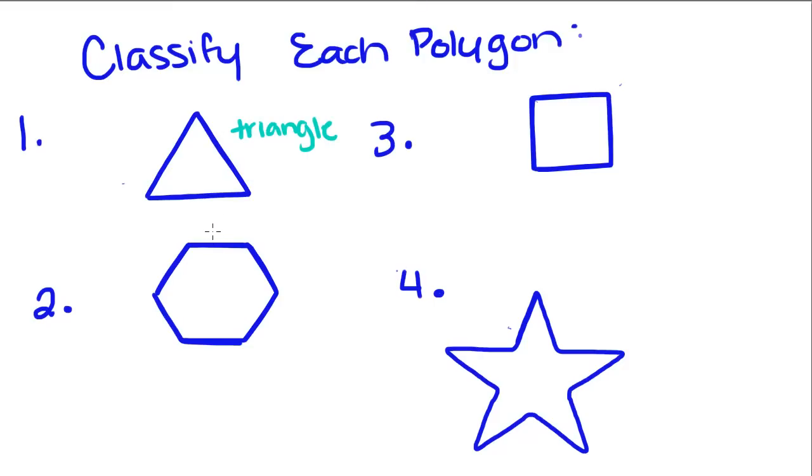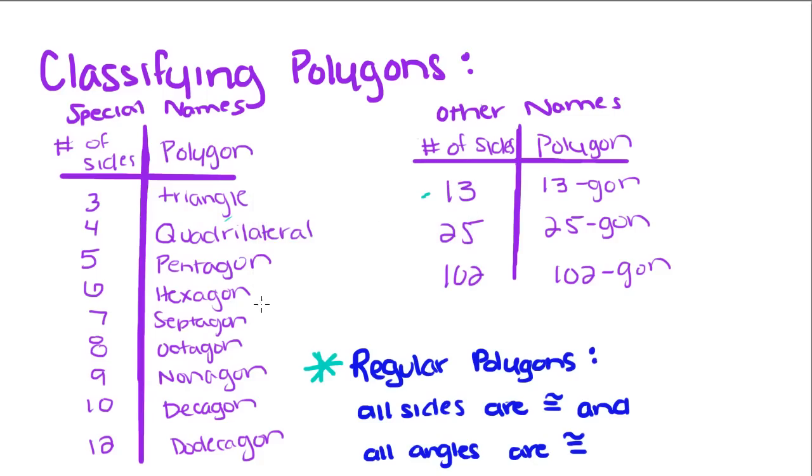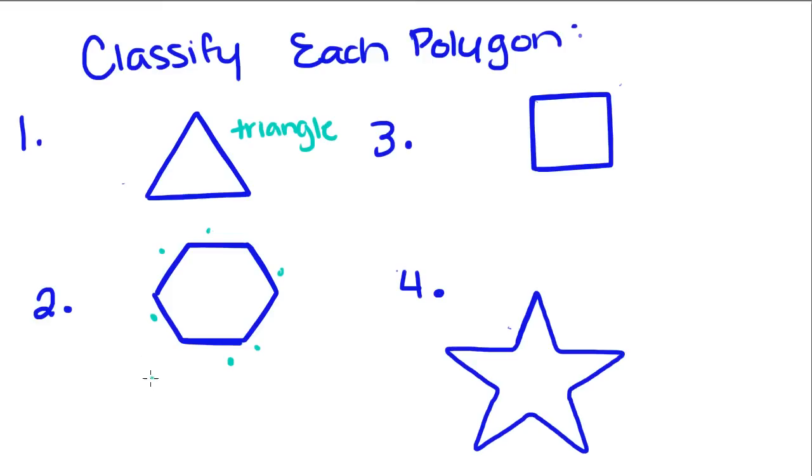Okay, so this has one, two, three, four, five, six sides. So if you remember, it's called a hexagon.